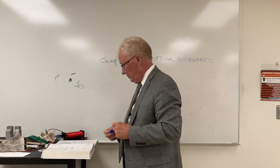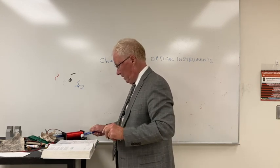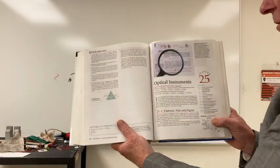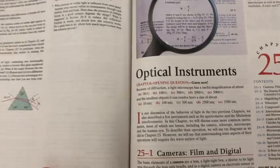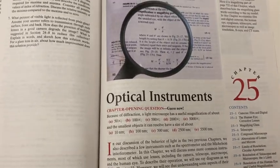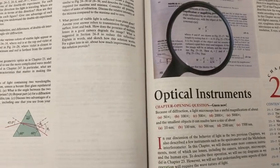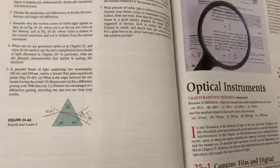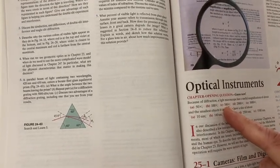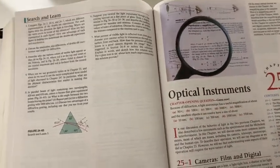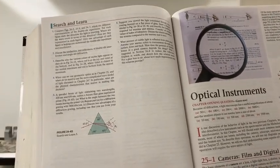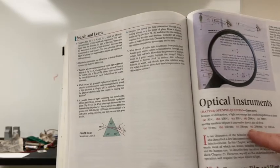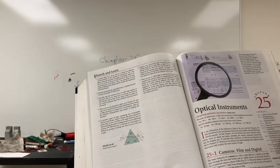The first question to think about is: what's the maximum you can magnify using a light microscope — would it be 50 times, 100 times, 500 times, 2,000 times, or 5,000 times? And what's the smallest object you could see — about 10 nanometers, 100 nanometers, 500 nanometers, 25, or 5,500 nanometers?